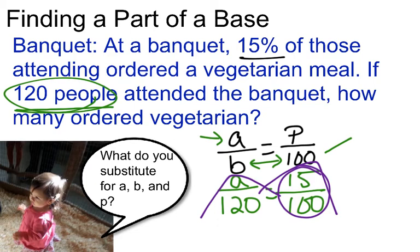If I didn't reduce it and I used cross products, across and down, across and down, I would get 100 times A equals 1800. So in this case, it's pretty easy to solve it this way because dividing 1800 by 100 is not very challenging. So if you reduce it, for some of you, it's just an extra step. So always look at what it would be doing cross products before you start reducing things or cross canceling anything.